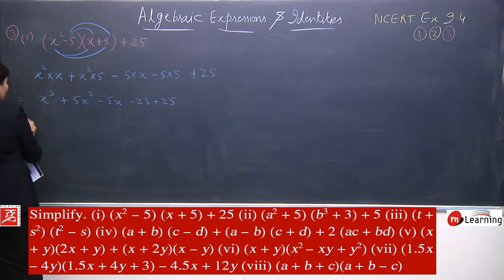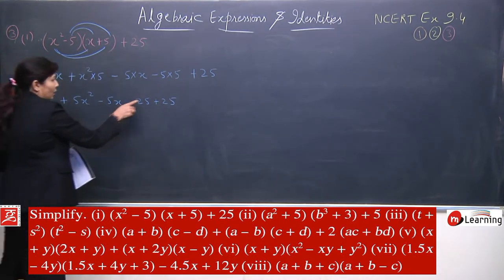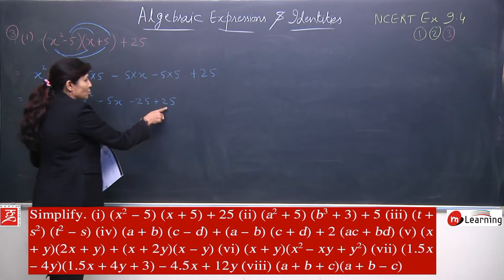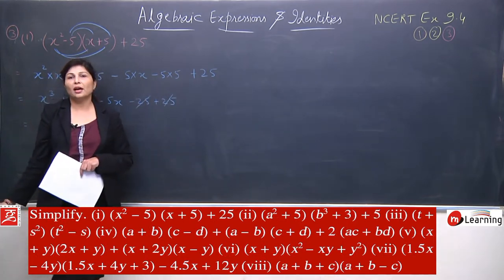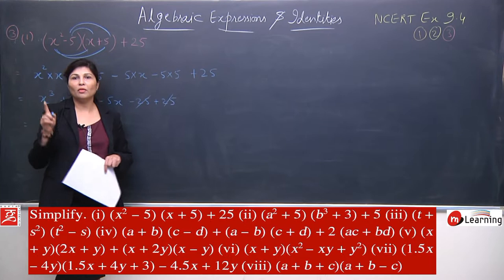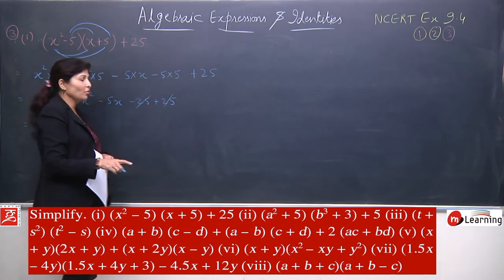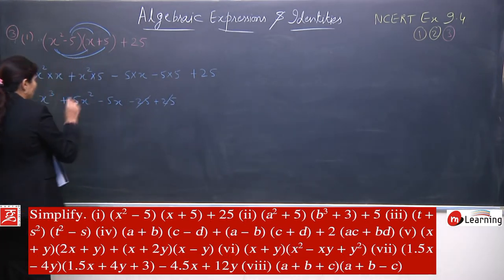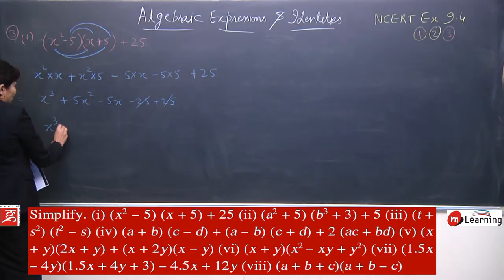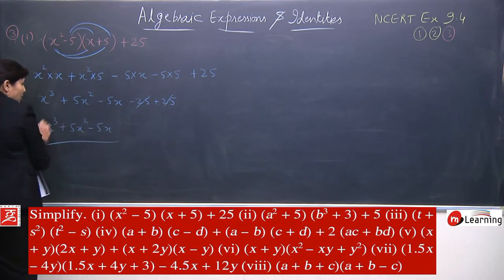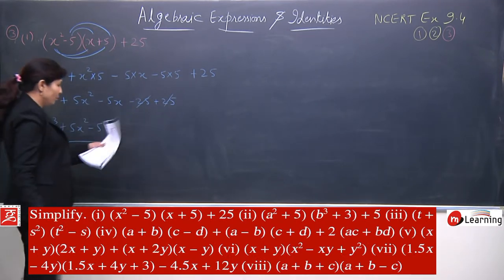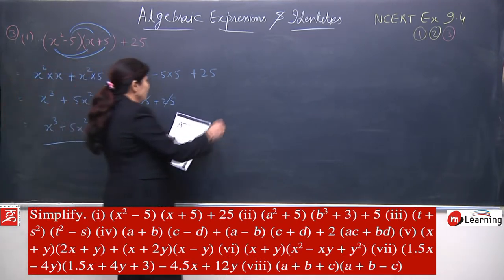Now check for like terms. These three terms have no like terms among them, but these two — plus 25 and minus 25 — are same with opposite signs, so they will cancel. 25 and minus 25 will give you 0. So your final answer is x cube. It was solved simply, but you have to be careful.